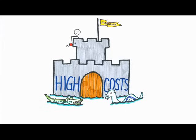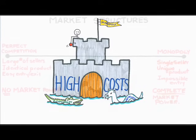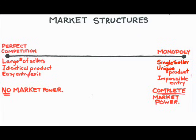Given all of these characteristics — only one producer, a unique product, and no one else can get into the industry to compete with you — how much market power, the ability to control price, does the monopoly producer have? The monopolist has complete control over the price, within the boundaries of what consumers are willing to pay.